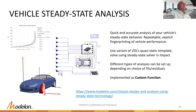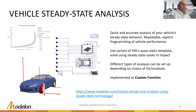The first example I want to highlight is vehicle steady state analysis — very common for fingerprinting your vehicle. We've always had quasi-static experiments in Vehicle Dynamics Library, but now we can use those same experiments with Modelon Impact's steady state solver. We can pick which variables to iterate on and which residuals to satisfy, enabling custom vehicle performance simulation. You can get things like the handling diagram showing vehicle center of gravity as a function of chassis acceleration.